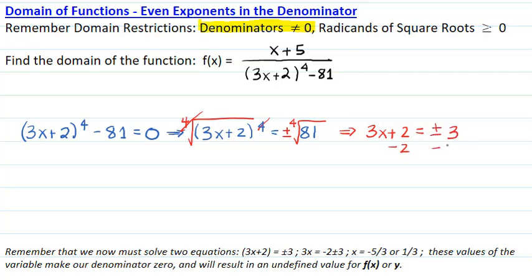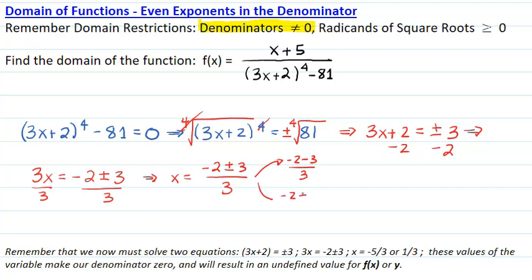We move the 2 to the right. 3x equals negative 2 plus or minus 3. We divide by 3. x is equal to negative 2 plus or minus 3 divided by 3. These are two solutions: negative 2 minus 3 divided by 3, and negative 2 plus 3 divided by 3. The values are negative 5 over 3 or 1 over 3.